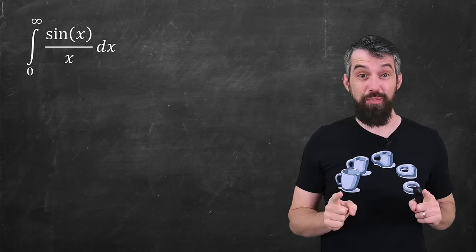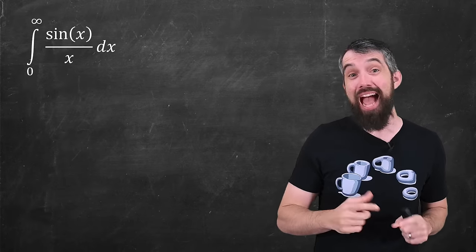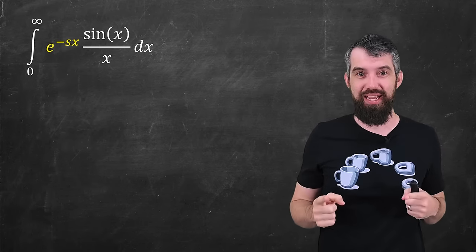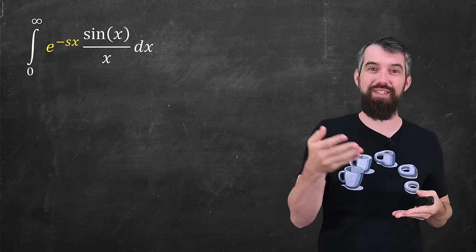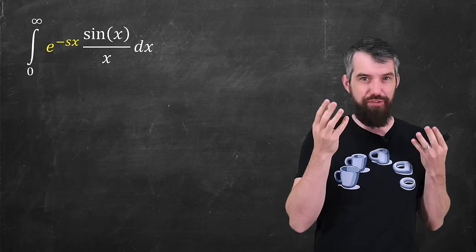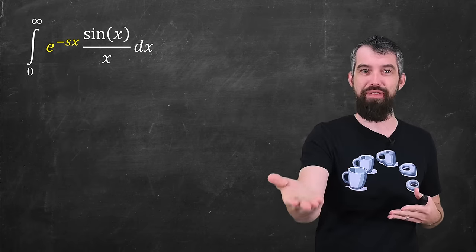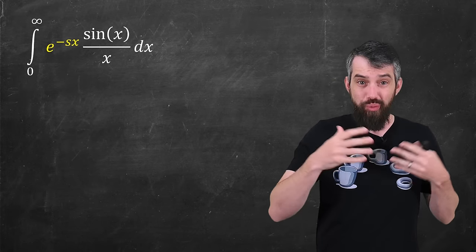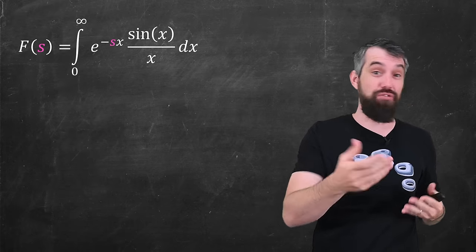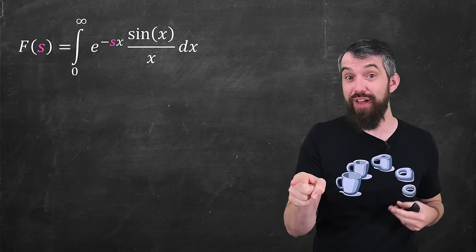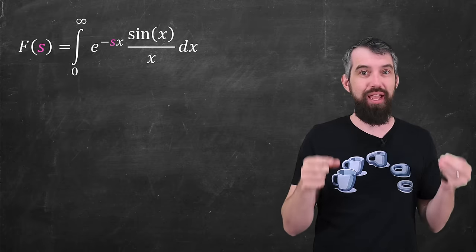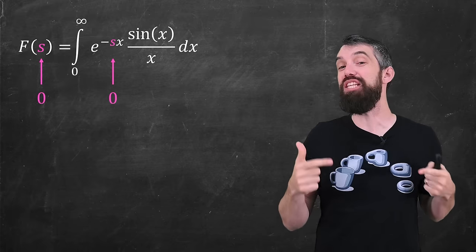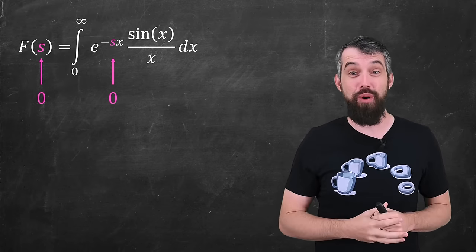The way the trick works is it starts by taking this integral and making it actually a little bit messier. What I'm going to do is input a factor e to the minus s times x. I'll tell you why in a moment. But for now, just note that for every different value of s, this integral, if it converges, is going to give a different value. So what we really have is a function of s. So I'll just call this f of s.